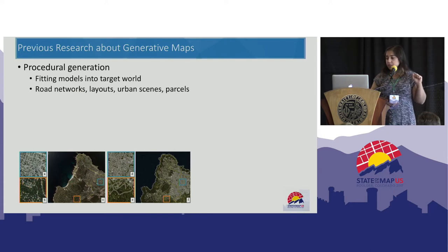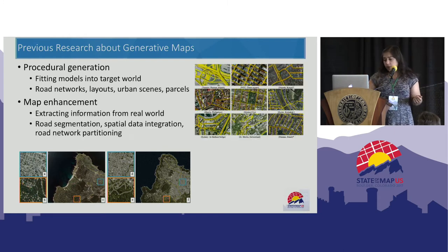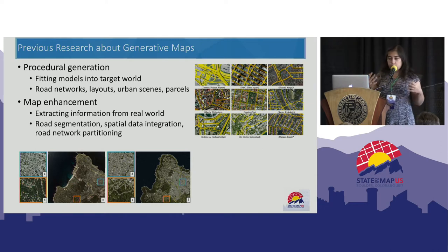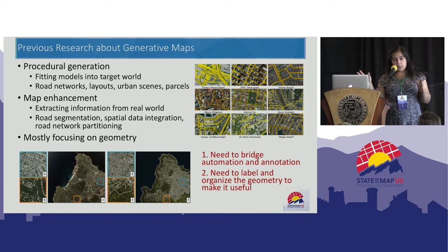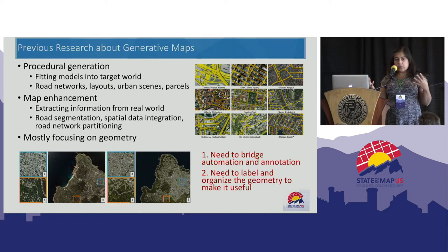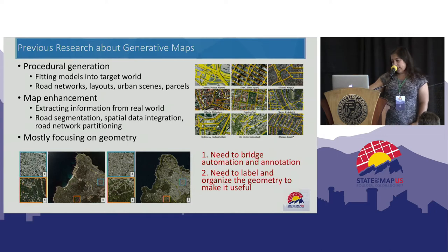In the literature, there are many approaches for generative maps. In graphics, there is procedural generation that fits a model to the target world. In vision communities, there is map enhancement, extracting information from the real world, growth segmentation, spatial data integration, et cetera. However, all those automated approaches need to bridge automation and annotation, because if they are not going into the real world, then why have them? We also need to label and organize the geometry to make it useful.